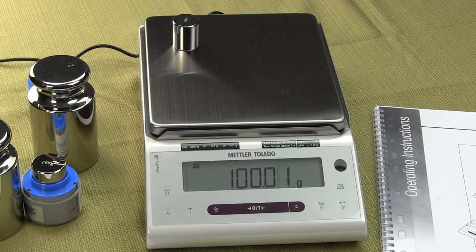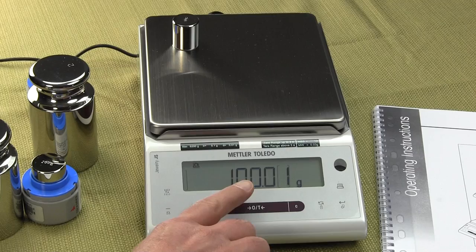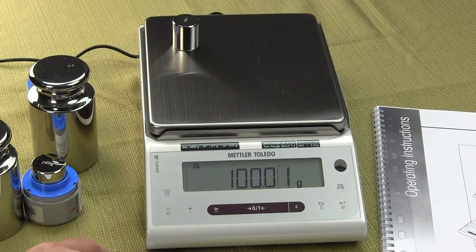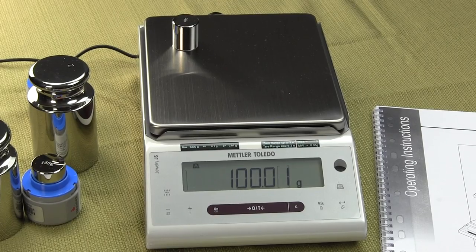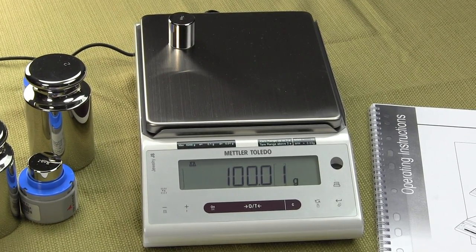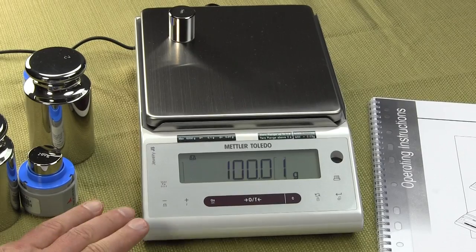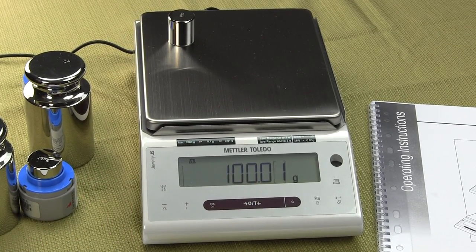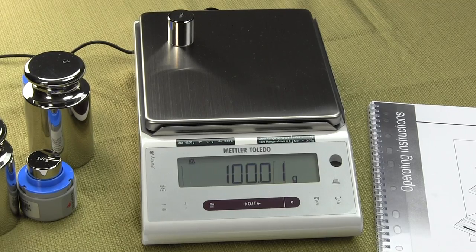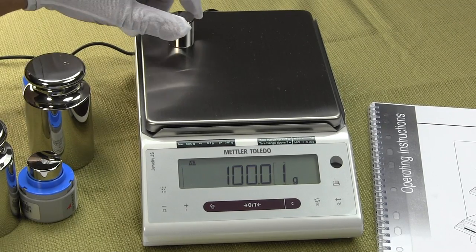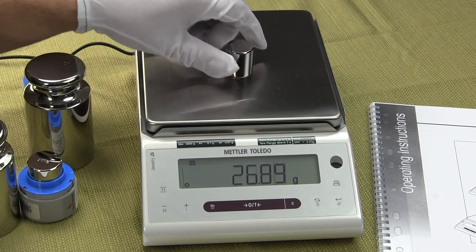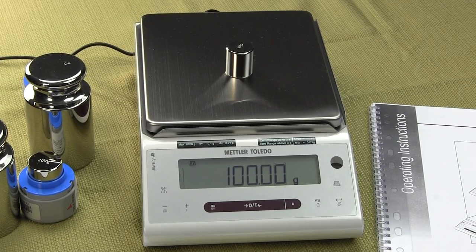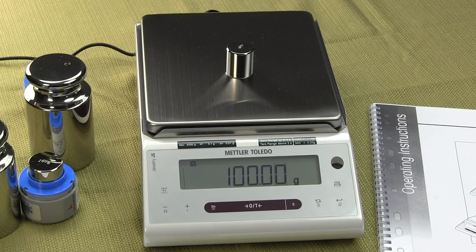This balance has an LCD display with a backlight and the JS series is loaded with features. This balance replaces the JP series. In the JS, you're going to get motorized internal calibration with backlight display. All the models in the JS series are force restoration balances and these balances all incorporate Mettler Toledo monoblock technology.